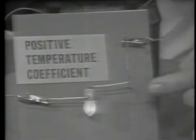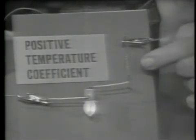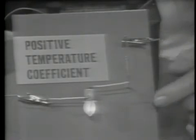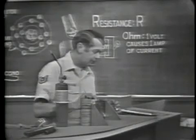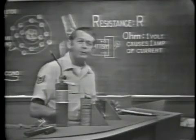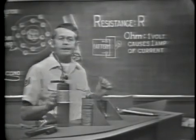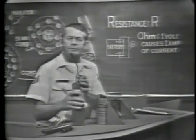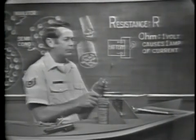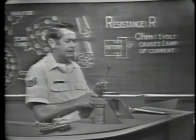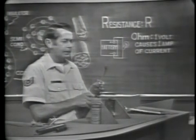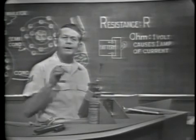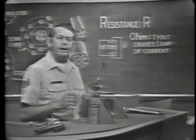If resistance goes up when the material gets hotter, as it did in this case, the material has a positive temperature coefficient. Tungsten then has a positive temperature coefficient. In the next example, let's use a piece of germanium — I'm going to decrease the flame just a little bit. Let's heat the germanium and see what happens.